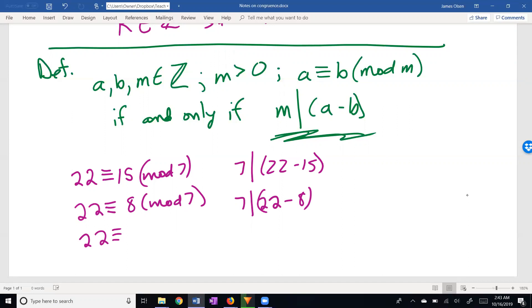22 is congruent to 1 mod 7. This is not a super hard concept. However, it is a new wording and we do have new notation. And anytime we have new notation, we have to grapple with it.